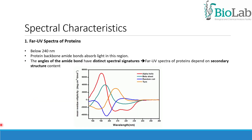CD bands of peptides and proteins appear in two spectral regions, the far and the near ultraviolet region. In the far ultraviolet region, typically from 182 to 240 nm, the absorbing group is principally the peptide bond. The angles of the bond have distinct spectral signatures, and for that reason, far UV spectra of proteins depend on secondary structure content. For example, the alpha helix motif displays large CD bands with negative ellipticity at 222 and 208 nm and positive ellipticity at 193 nm.